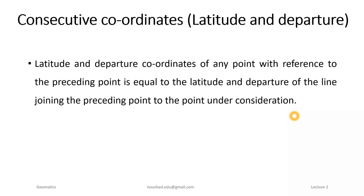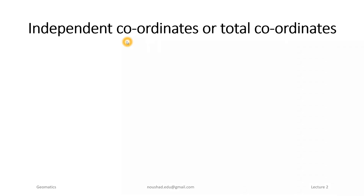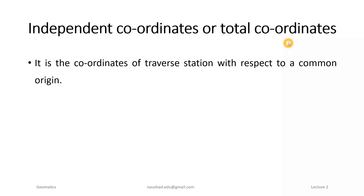The consecutive coordinates are now tabulated for points A, B, C, D of the traverse. Each point's consecutive coordinates are obtained by adding the latitude and departure of each survey line to the preceding point.